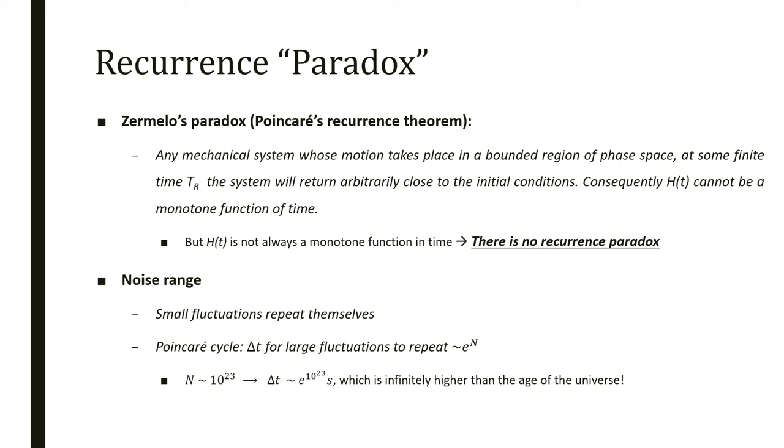It was the first time that a probability density was treated as evolving in time, and physicists were used to dealing with mechanics that is highly deterministic, so a probability evolution is something new to them. If we try to check Poincaré's theorem in the noise range due to variations of H, we can see that small fluctuations will repeat themselves, and for large fluctuations, even if they have probability almost zero, we can calculate the time delta t that they will take to repeat, called the Poincaré cycle, which would be proportional to e elevated to the power of the number of degrees of freedom. If we have 10^23 molecules, the time would be e^(10^23), which is infinite time, much higher than the age of the universe. It's not physical to discuss that, so there is no paradox within it.